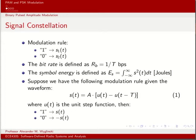Several things to remember that we'll be referring to extensively throughout the rest of this course: the bit rate — how many bits are being transmitted per unit time — is equal to 1 over the bit period, or the duration of a single bit, referred to as capital T. Another item to pay attention to is something called the symbol energy, referred to as E_S. The symbol energy equals the square of the signal waveform integrated from minus infinity to infinity, with units in joules.